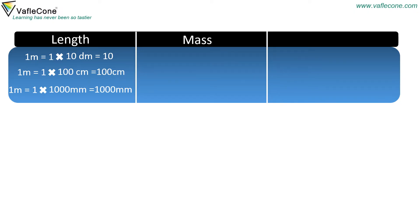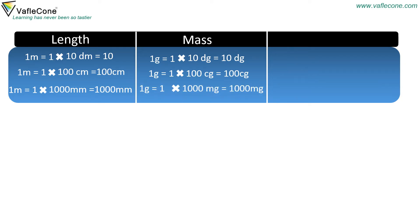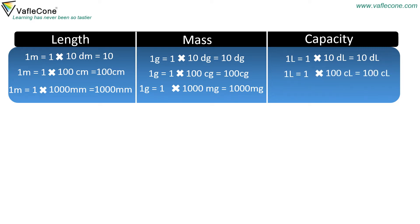Mass: 1 gram is equal to 1 × 10 decigrams, which equals 10 decigrams. 1 gram is equal to 1 × 100 centigrams, which equals 100 centigrams. 1 kilogram is equal to 1 × 1000 milligrams, which equals 1000 milligrams. Capacity: 1 litre is equal to 1 × 10 decilitres, which equals 10 decilitres. 1 litre is equal to 1 × 100 centilitres, which equals 100 centilitres. 1 litre is equal to 1 × 1000 millilitres, which equals 1000 millilitres.